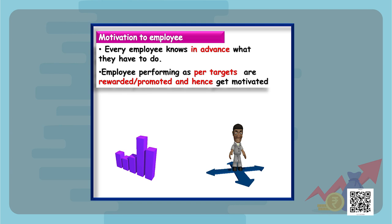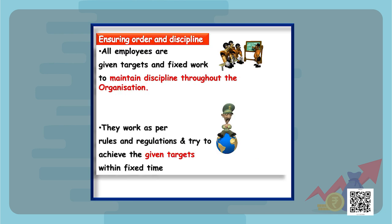If employees are informed in advance about on what basis they will be judged, they will be determined and motivated to perform better. Another benefit is that controlling ensures order and discipline throughout the organization. All employees are given targets and their work is fixed, which maintains discipline because they know what is to be done and when it is to be done.